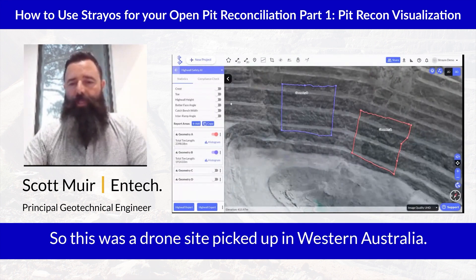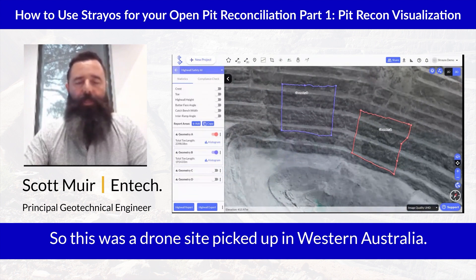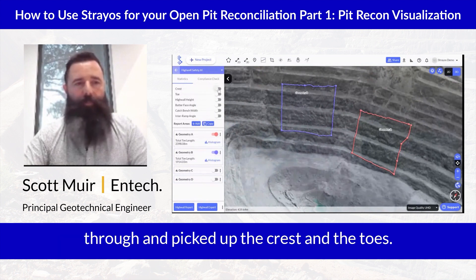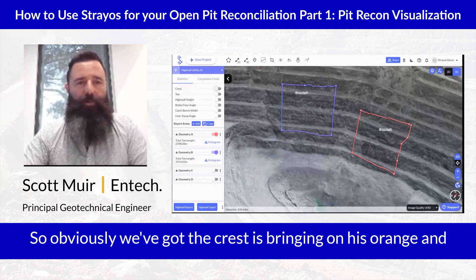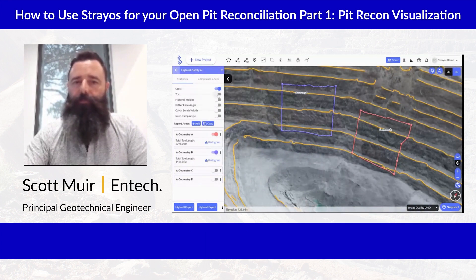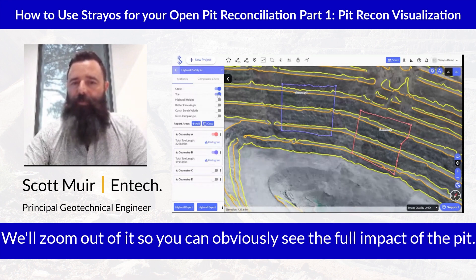This was a site picked up in Western Australia. The image has been processed and the AI has gone through and picked up the crest and the toes. The crest is shown in orange and the toes in yellow. I'll zoom out a bit so you can see the full impact of the pit.